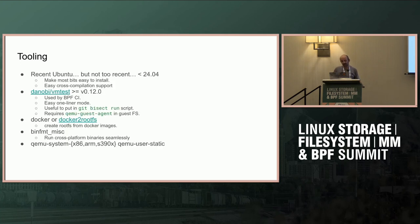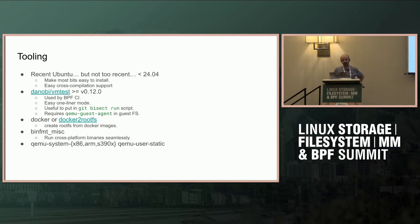There are a few requirements: a recent Ubuntu — not too recent, as 24.04 failed for me, but it works on 20.04 which is what we run in CI, and also on 23.10 which is what I was using for VM tests. You'll need QEMU guest agent installed in the VM filesystem, either Docker or docker2rootfs — a small program I wrote to get a Docker image without using Docker — to build the rootfs if needed, binfmt, and QEMU in general since we're talking about virtualization.